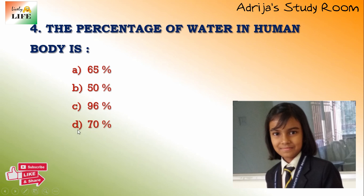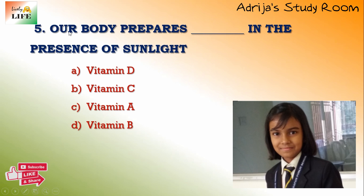Next question: our body produces dash in the presence of sunlight. Here some names of vitamins are given — vitamin D, vitamin C, vitamin A, or vitamin B. Our body produces vitamin D in the presence of sunlight. So the answer is A.